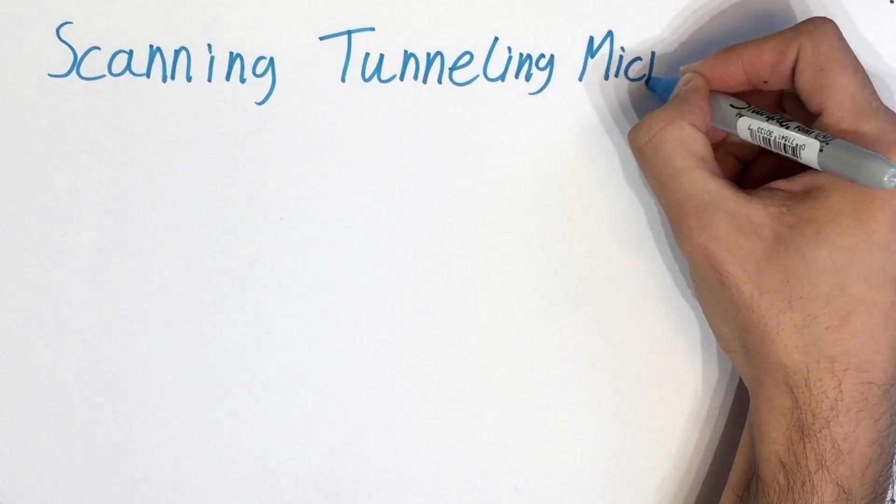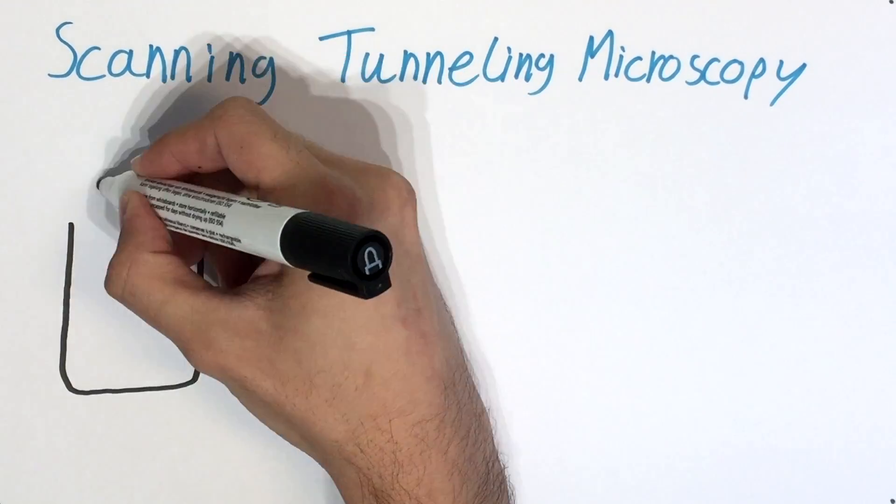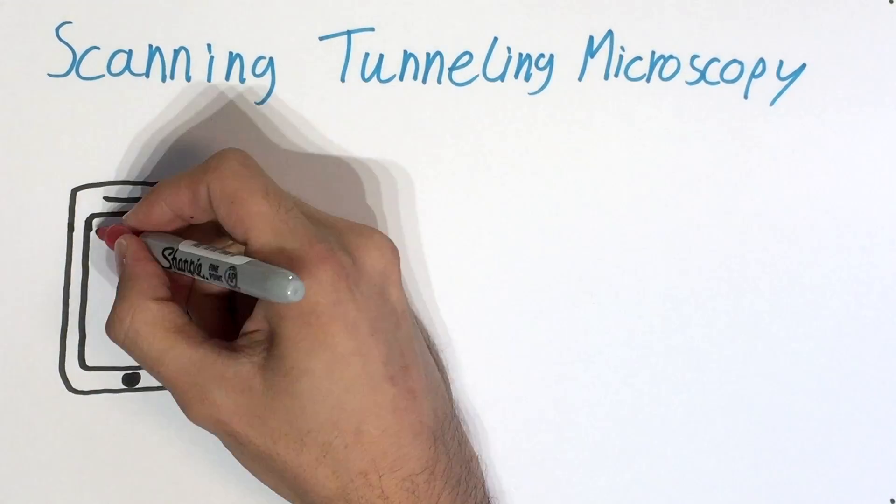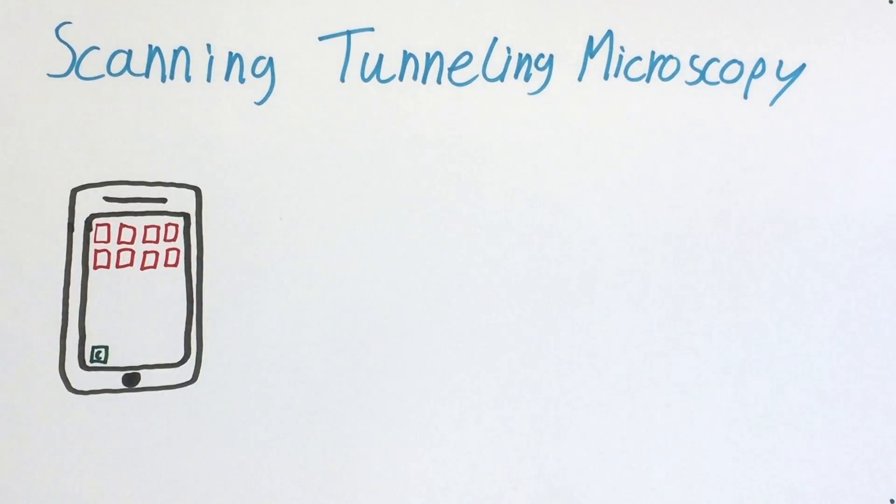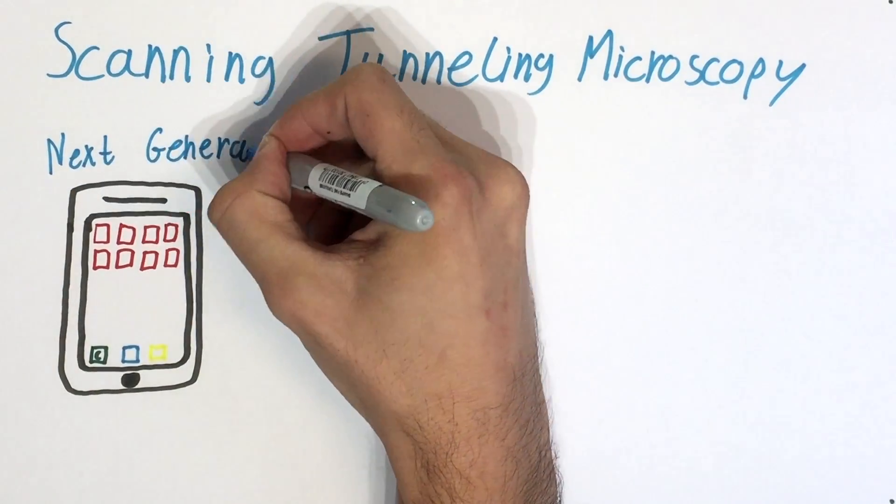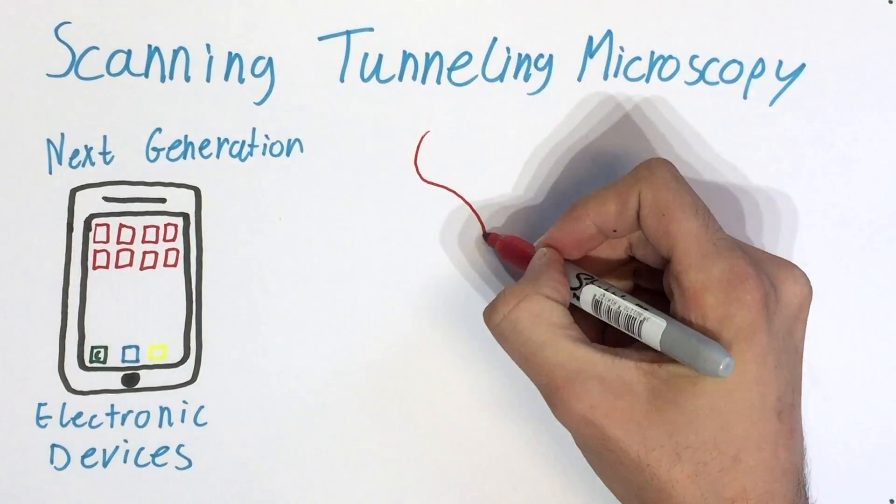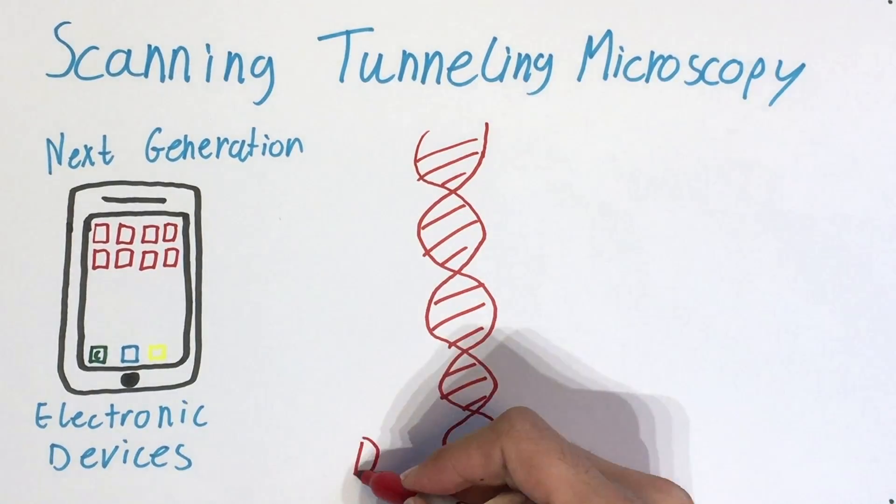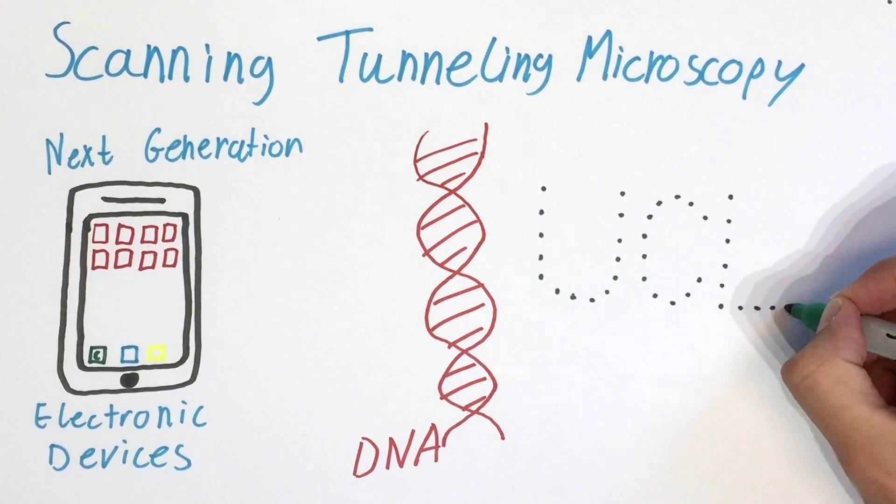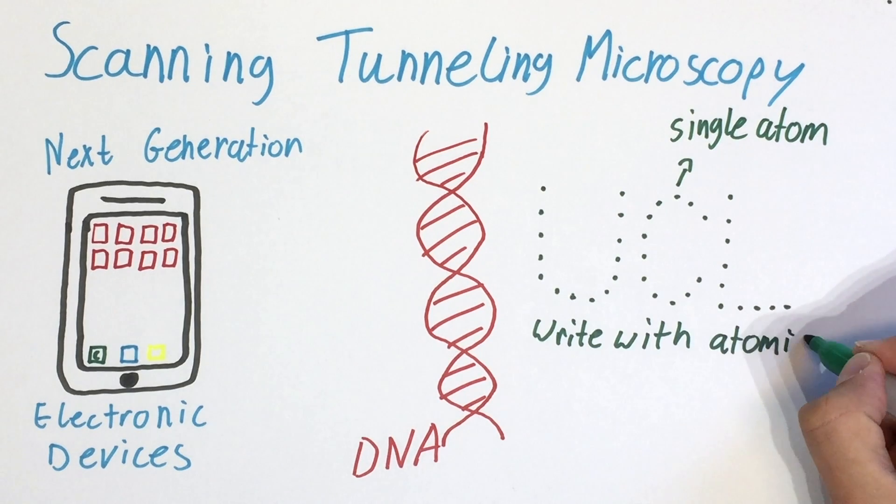Although scanning tunneling microscopy initially might not seem so important, it has an indirect impact in our everyday lives since it is used to study and develop nanoscale components for our next generation electronic devices, study DNA molecules, and the most stunning of all is giving us the possibility to write with atomic resolution.